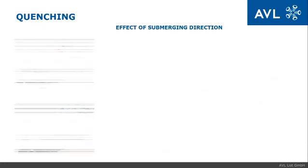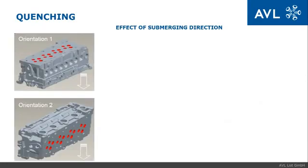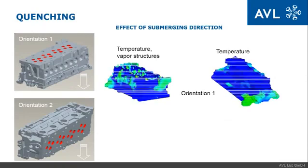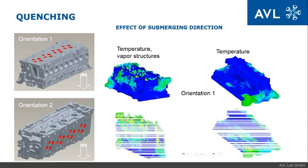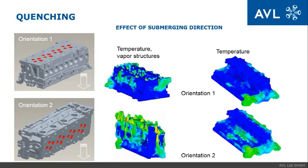One of the quenching process parameters which can be optimized is the part's orientation during submerging. The submerging direction is known to affect the cooling. The cylinder head example shown here shows two different submerging orientations — top side down and intake side down — which show different cooling on the inside, resulting in very different residual stresses.